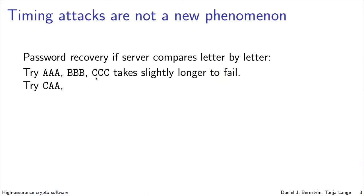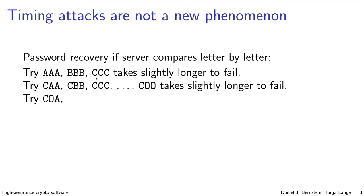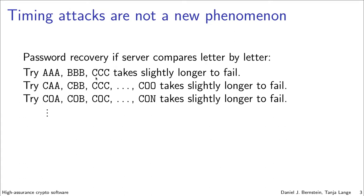Back in the days when logging into a server, it might do a character-by-character password check. You're sending 'aaa', 'bbb', 'ccc' — none of them will actually work, but you observe the time it takes to say this password is wrong. You notice that 'CCC' takes a little bit more time, and then try 'CAA', 'CBB', 'CCC' and so on — it still fails in about the same time until you get to 'C00', when it takes a little bit more time.